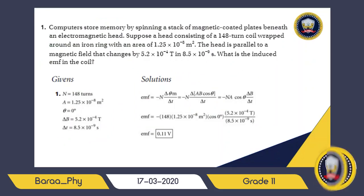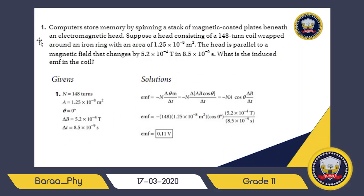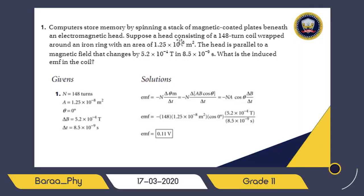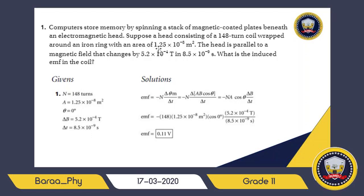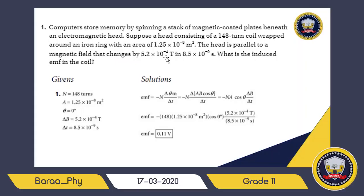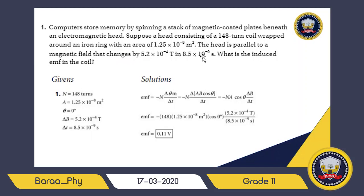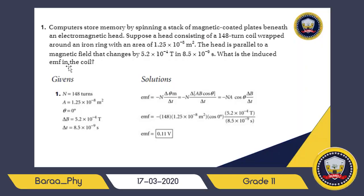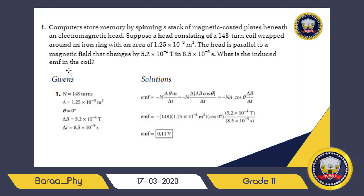We will do Practice A from the digital book. I will solve two questions, then you have two questions as homework. The first question is about a computer's stored memory. We have an electromagnetic head consisting of a 148-turn coil wrapped around an iron ring with an area equal to 1.25 times 10 to the negative 8. The head is parallel to the magnetic field. You have to understand the question and write down the givens.